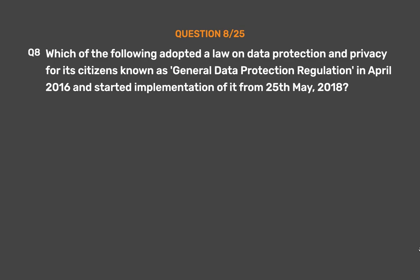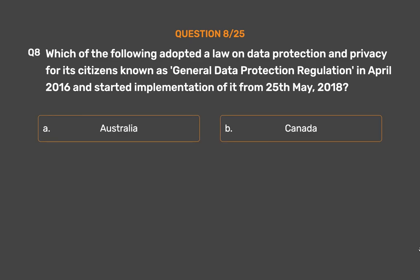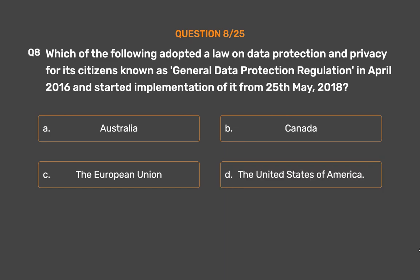Question No. 8: Which of the following adopted a law on data protection and privacy for its citizens known as the General Data Protection Regulation in April 2016 and started implementation of it from 25th May 2018? Option A: Australia. Option B: Canada. Option C: The European Union. Option D: The United States of America.